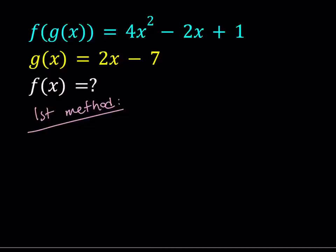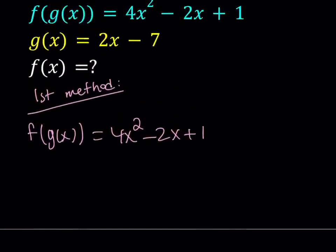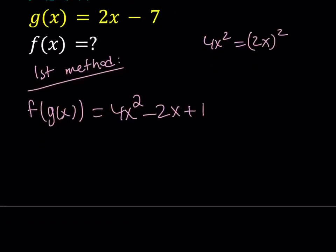I know what I said may not make sense to everyone, but that's okay, let's see what happens. I'm going to start with f of g of x equals 4x squared minus 2x plus 1, and then at some point I'm going to manipulate this expression so that it may look like a function of 2x minus 7. Notice that 4x squared is 2x quantity squared. So I can take 2x minus 7 and just square it. Let's see what happens if I square 2x minus 7.